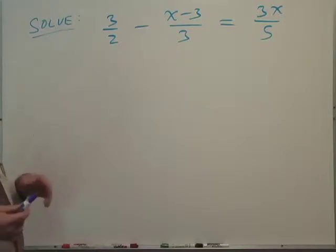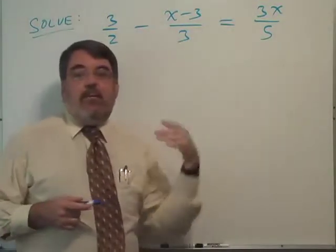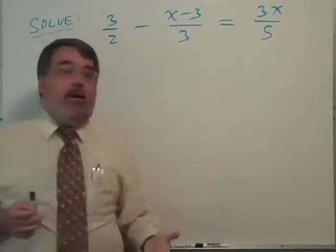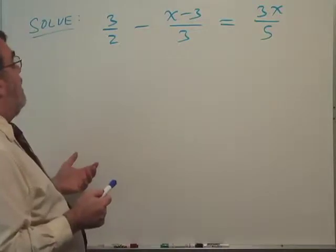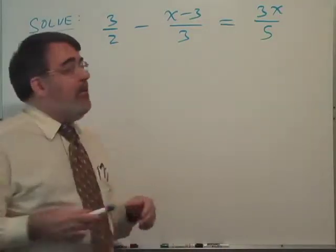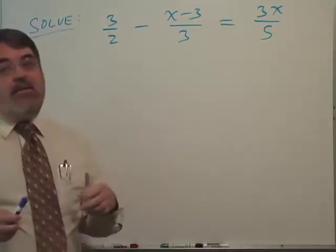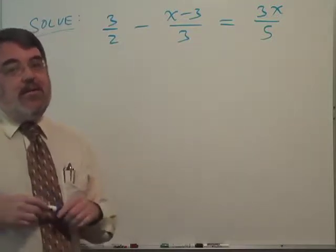It turns out the least common denominator is your best choice for that purpose. So if you look at 2, 3, and 5, what would be the least common denominator? That would have to be 30. So my strategy here is to multiply the entire equation by 30.